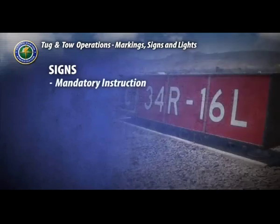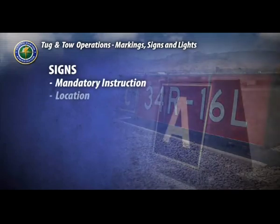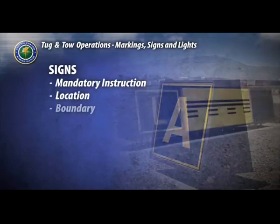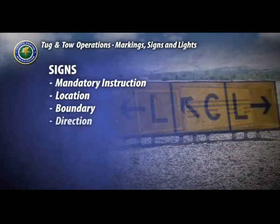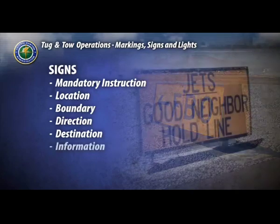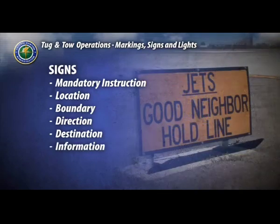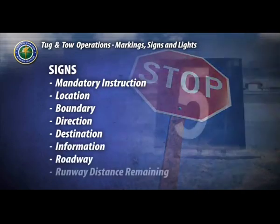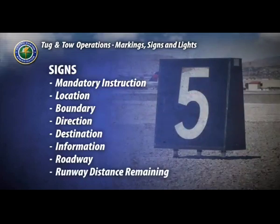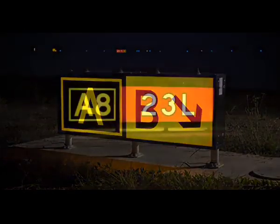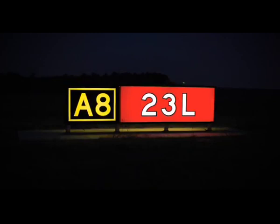The eight categories are: mandatory instruction signs, location signs, boundary signs, direction signs, destination signs, information signs, roadway signs, and runway distance remaining signs. We'll examine the signs in each category you'll need to know.